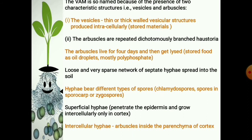VAM is so named because of the presence of two characteristic structures: vesicles and arbuscules. The vesicles are thin or thick-walled vesicular structures produced intracellularly and store materials like polyphosphate and other minerals. The arbuscules are produced by repeated dichotomous branching and grow intracellularly. The arbuscules live for about four days and then degenerate, releasing stored food as oil droplets, mostly polyphosphate. There is no fungal mantle but only a loose and very sparse network of septate hyphae spread into the soil, bearing different types of spores — chlamydospores, or aggregations of spores into a sporocarp, or zygospores.